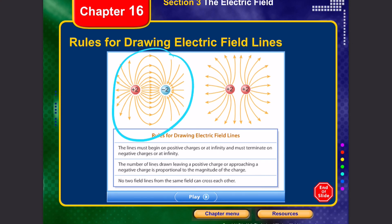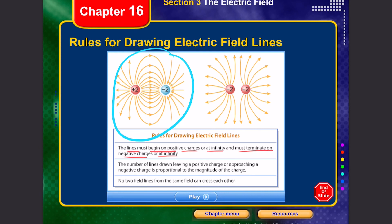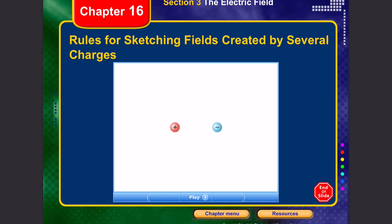The rules for drawing electric field lines: First, lines must begin on positive charges and terminate on negative charges (or at infinity). Second, the number of lines leaving or approaching a charge is proportional to the magnitude of the charge — the larger the charge, the more lines. Third, no two field lines from the same field can cross or intersect each other.